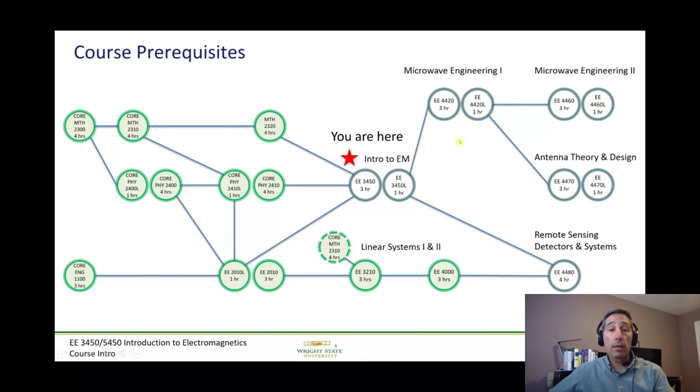So this is where you're at in this orientation, intro to electromagnetics. To get here, it takes three courses of math, calculus, two courses in physics, and circuits. And as you go forward though, then you're ready to move into the microwave engineering one and two, which teaches you component design and the antenna theory. Or you can go into the remote sensing part, which includes linear systems.